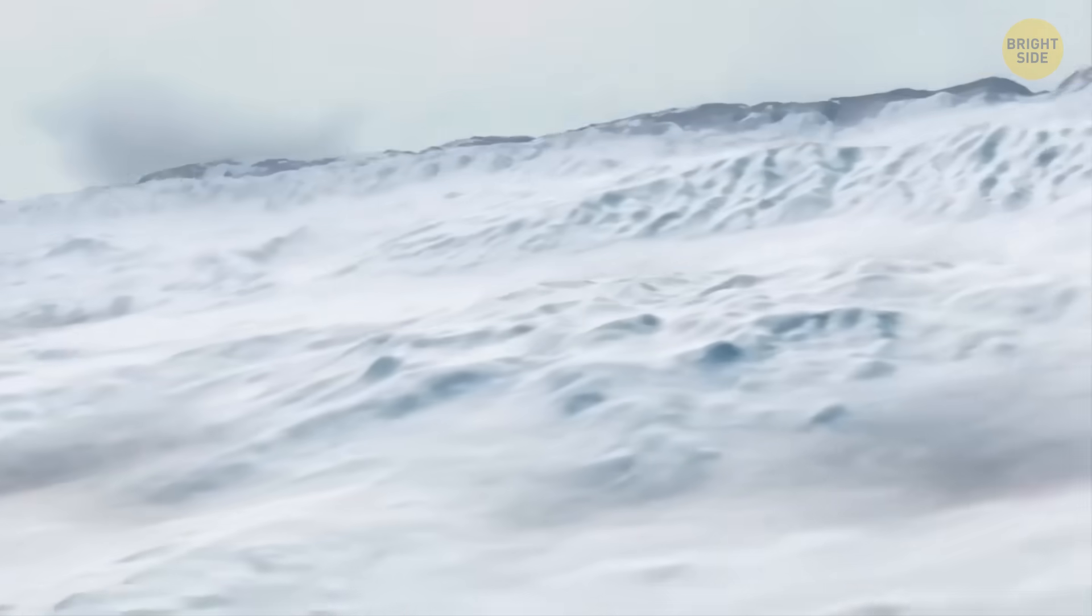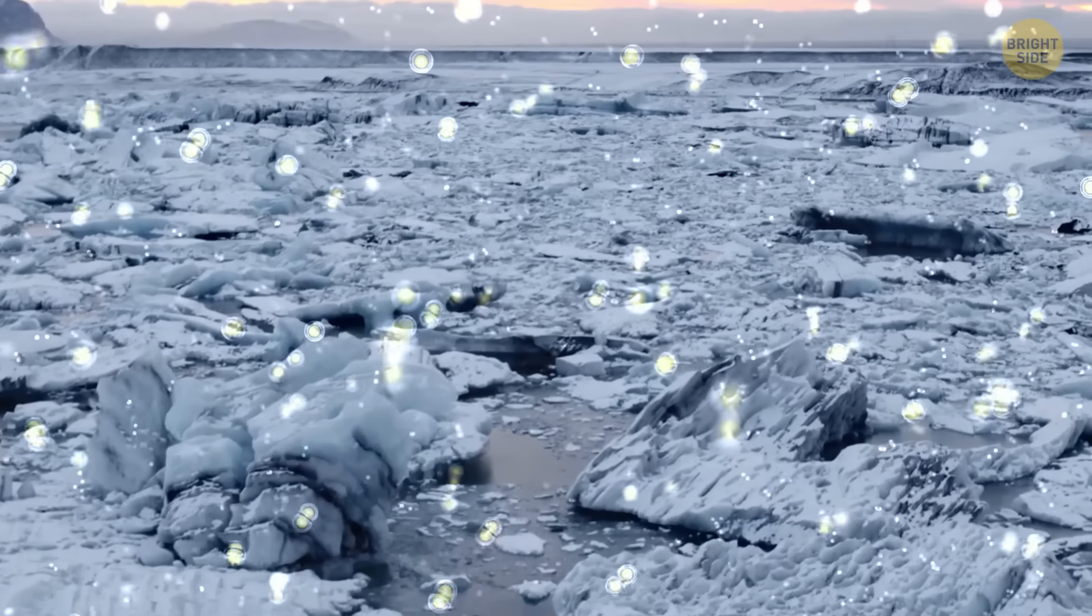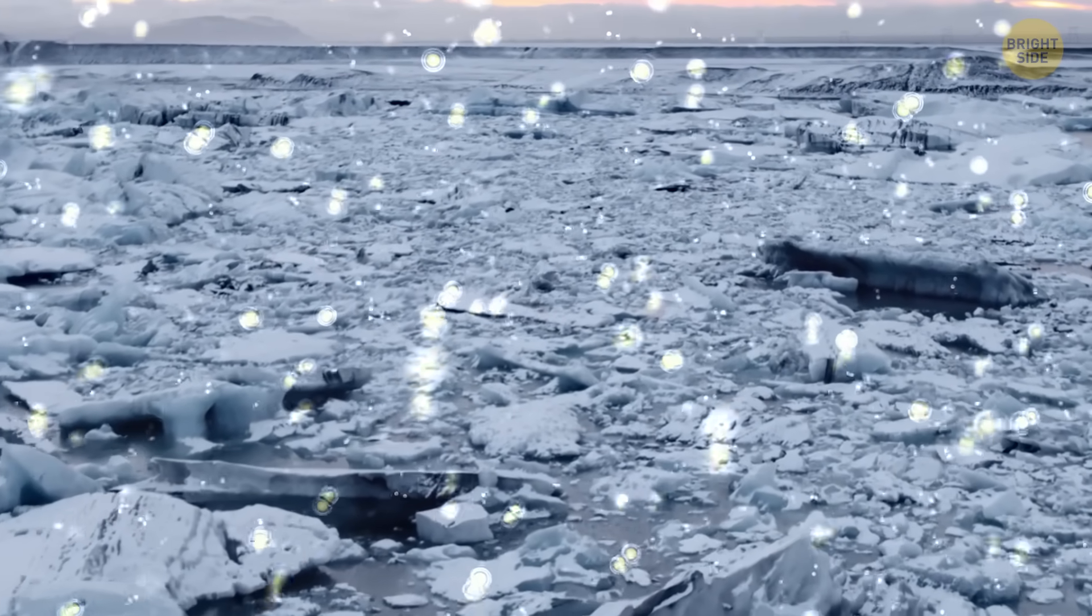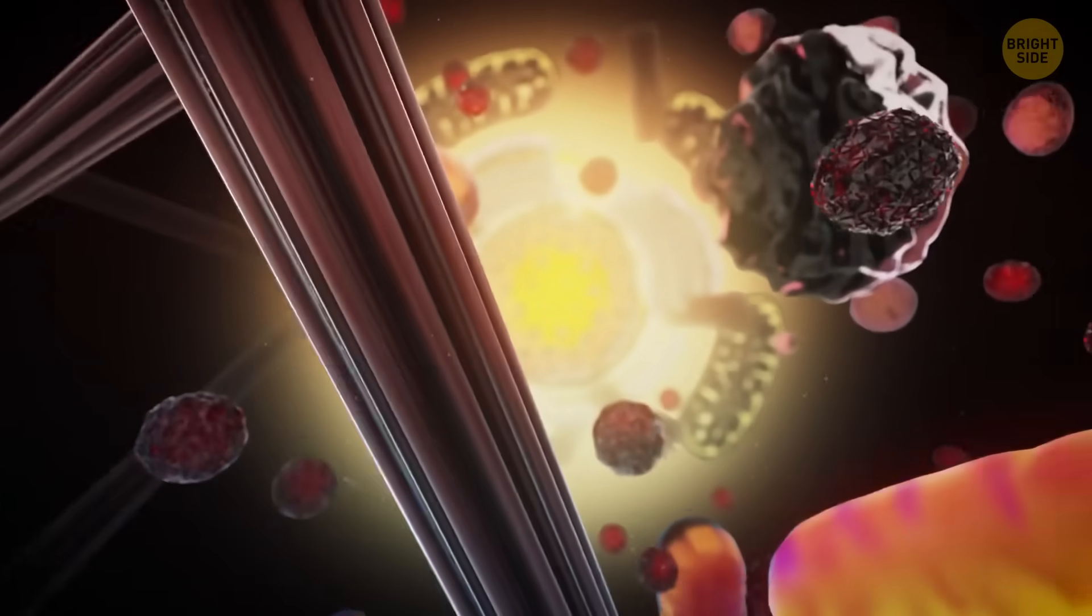With less carbon dioxide, Earth slowly cooled down. That cooler climate helped the new shallow seas become stable and rich in oxygen. Such calm, oxygen-filled environments are perfect for life to become more complex. Those huge shallow seas near the continents acted like safe nurseries for early life. They may have helped eukaryotes evolve faster.